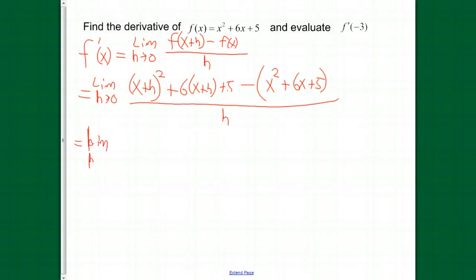So, now, this limit just sits out there for a little while. Well, x plus h, and you square that. x squared plus 2xh plus h squared. Distribute the 6, so plus 6x plus 6h. We've got a plus 5, and we're subtracting each of those terms. So, minus x squared minus 6x minus 5, all over h.